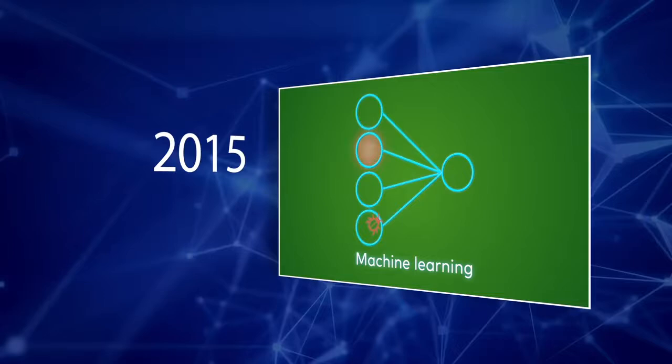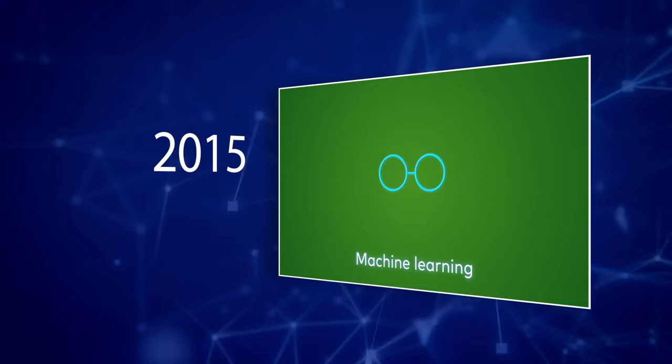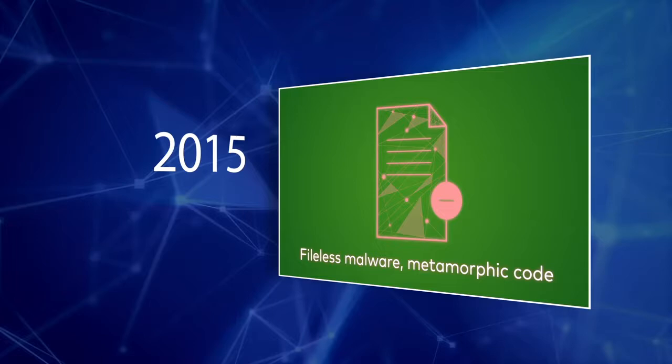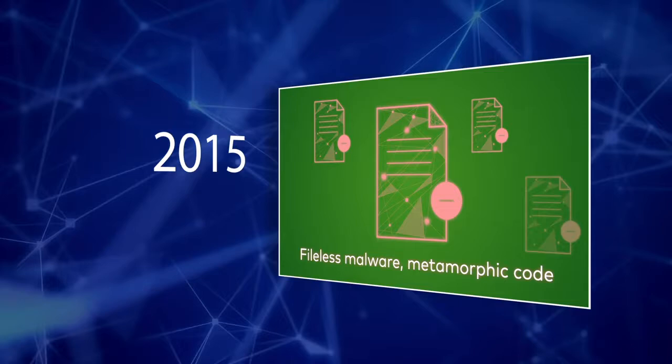However, it was still not 100% effective when facing new or never before seen threats, while still creating high false positive rates. Hackers found it easy to bypass this protection using file-less techniques, metamorphic code, and new attack vectors and surfaces.